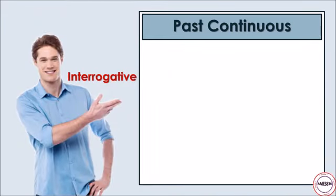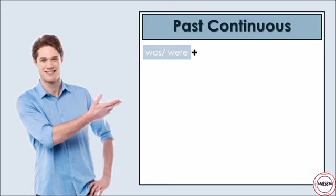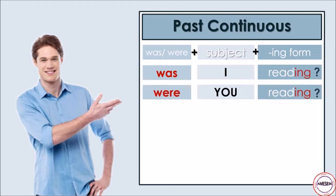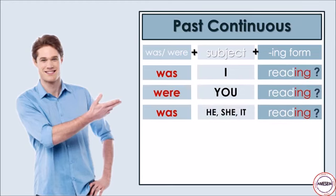Interrogative: was or were plus subject plus -ing form. Was I reading? Were you reading? Was she reading?